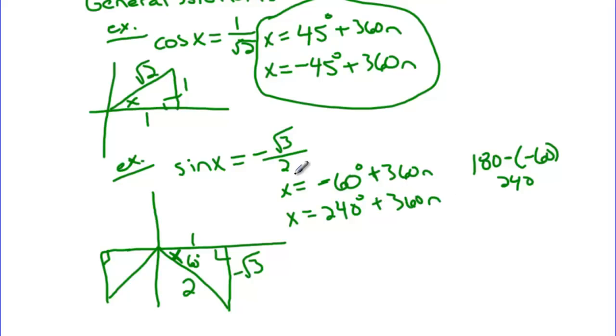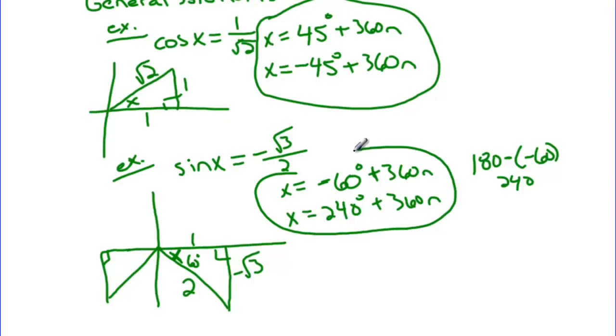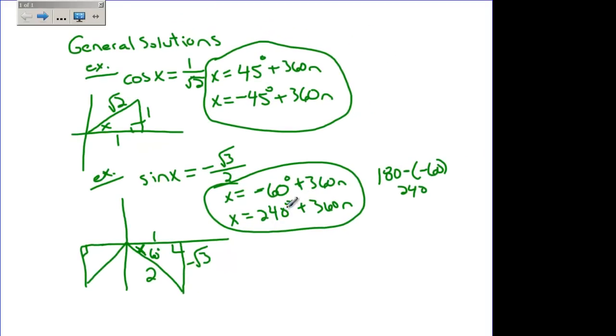So my other answer for sine is 240 plus 360n. So for sine, you find your principal inverse value, add 360n. The other answer is π minus the principal inverse value, or since we're in degrees, it's 180 minus that principal inverse value.